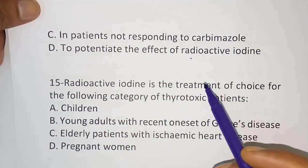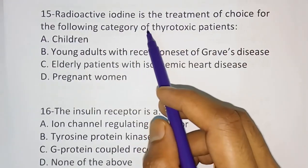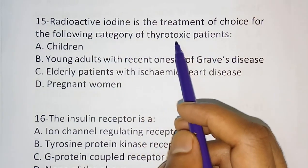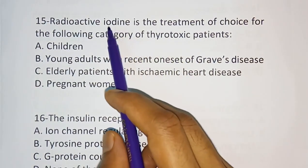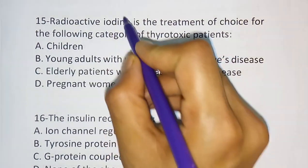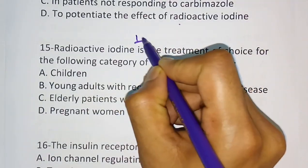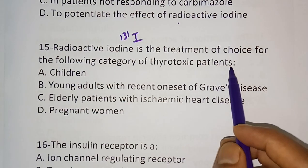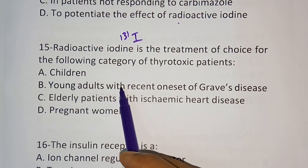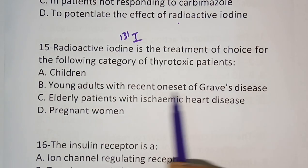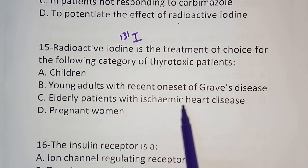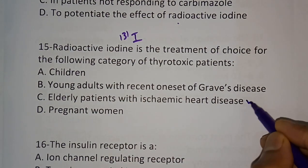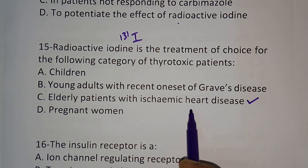Question number fifteen: Radioactive iodine is the treatment of choice for the following category of thyrotoxic patient — options are children, young adults with recent onset of Graves' disease, elderly patients with ischemic heart disease, or pregnant women. The correct answer is option C, elderly patients with ischemic heart disease.